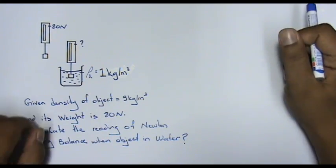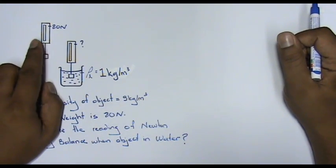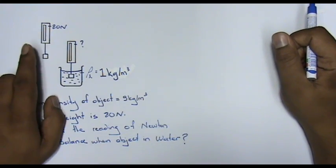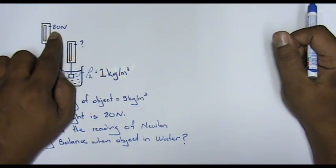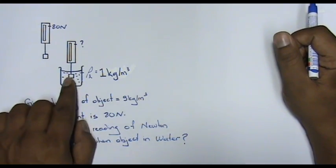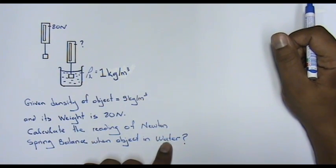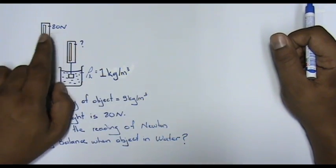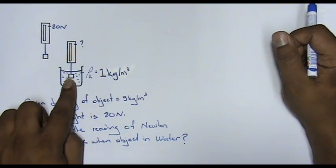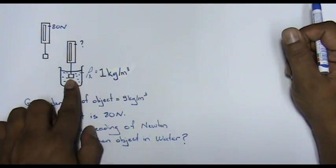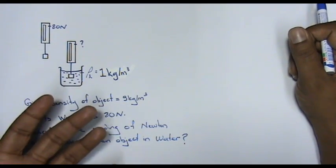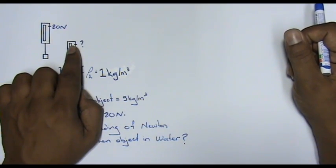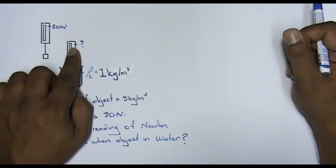An object is hanging using a Newton spring balance. When it's hanging outside, the weight is given as 80 Newtons. The moment you put it inside water — in this case water with a density of 1 kilogram per cubic meter — there will be a buoyant force pushing the object upward. So what will the reading of the Newton spring balance be? Will it be higher or lower than 80 Newtons?